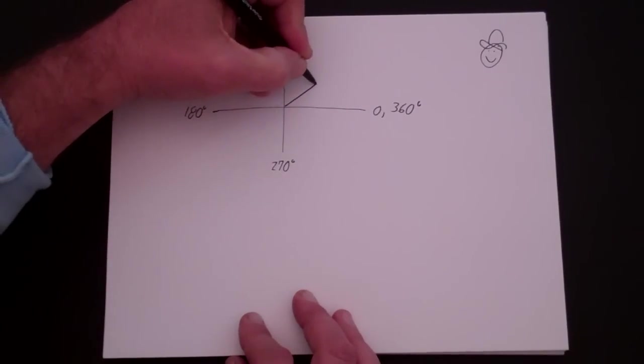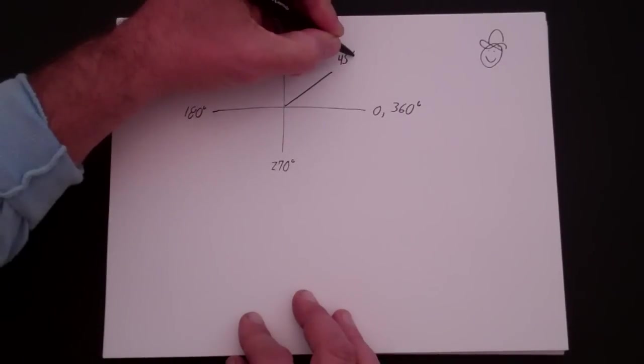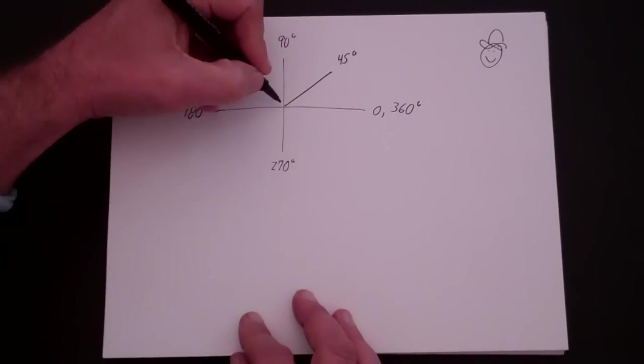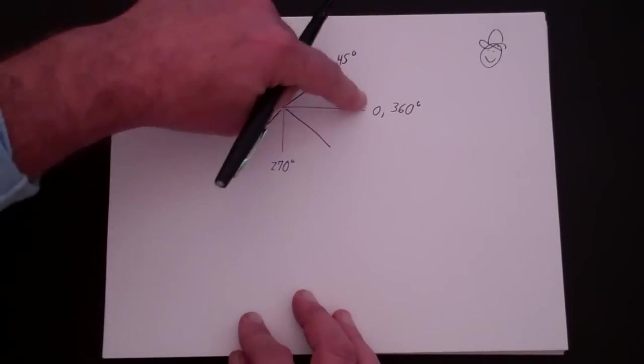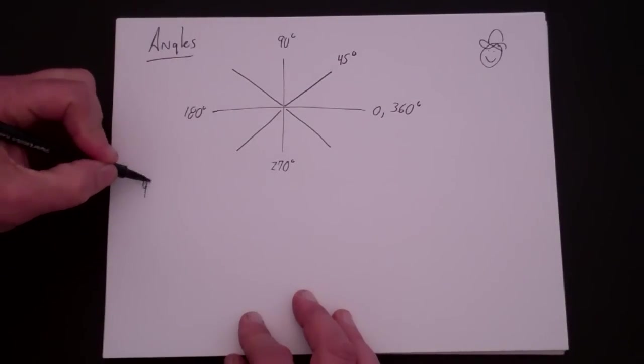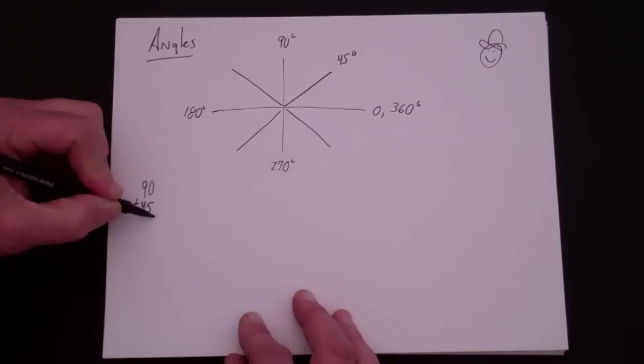This is going to be 45 degrees right here. And then if you wanted to, you could split each one of these up. Now these you might not remember the actual numbers, but this is 90 plus 45. If you think about that, 90 plus 45 is 135.